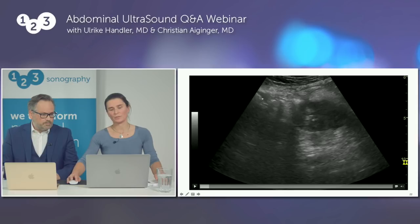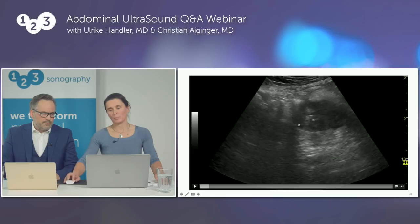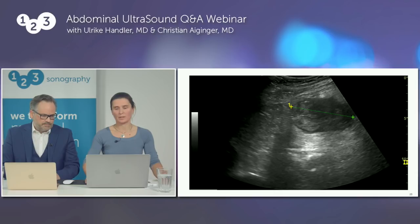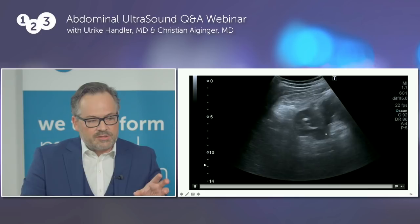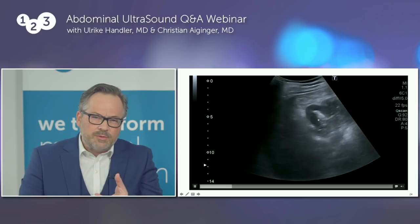Here is another example: the so-called 'pseudokidney sign.' The colon looks as if there's another kidney — you have a hypoechoic rim of tumor and inside there are hyperechoic reflexes of gas bubbles — making it look like a pseudokidney. The diameter here is more than five centimeters.